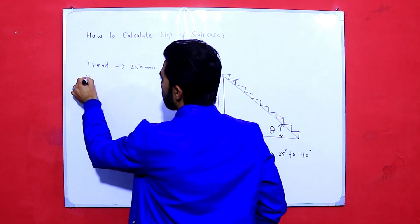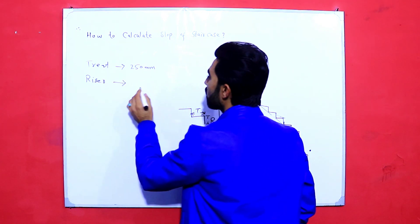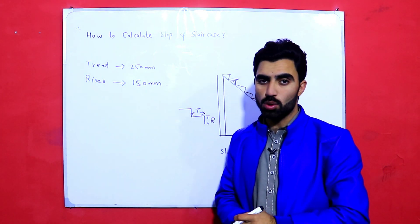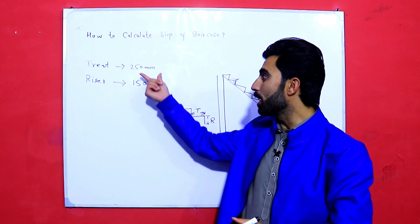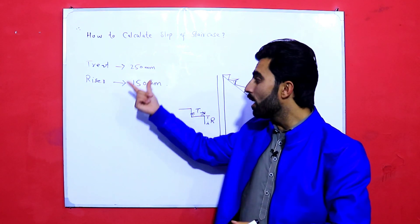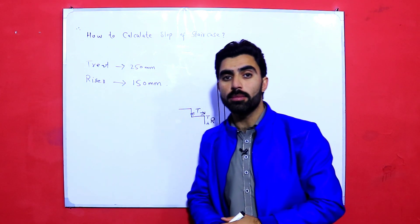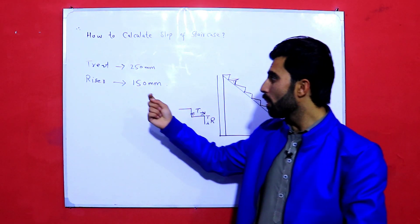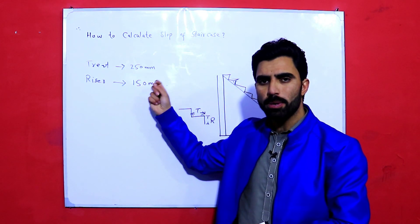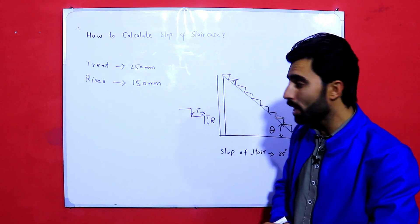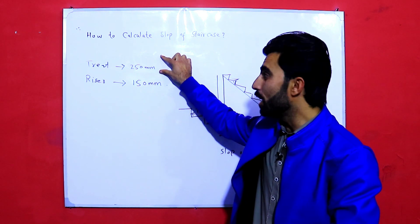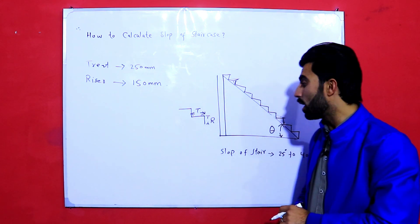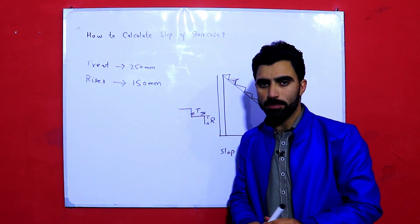This is called the tread and this one is called the riser. So the tread must be 250 mm. The riser should be 150 mm, or 175 mm is also acceptable. 150 mm becomes 6 inches and 175 mm becomes 7 inches. The riser should not be more than 7 inches. Keep it excluded from, not included with, the tread. So tread is 250 mm.